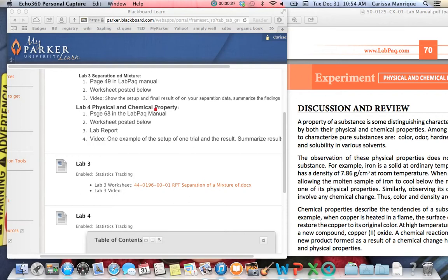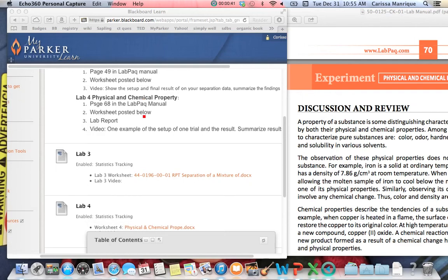The lab report will go over physical and chemical properties. Basically, in the introduction you'll tell me the definition of a physical and chemical property, give examples, make sure you give me the results and explain the results of the study. Everything will be about physical and chemical properties.